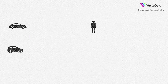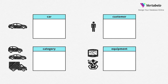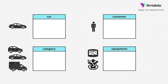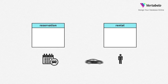Tables represent the basic entities of your system. For example, in a car rental system, there will be tables for car, customer, car category, car equipment and so on. There will also be tables representing events and transactions — in a car rental system, you have tables for reservation and rental.